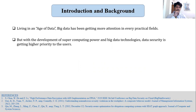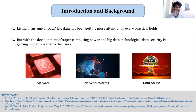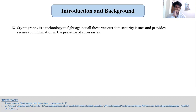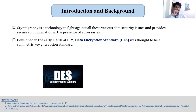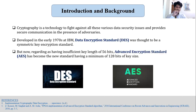Let's start with some introduction and background. Living in the age of data, big data has been getting more attention in every practical field, but with the development of computing power and technology, data security is getting more and more priority, as traditional threats such as malware, network worms, and data abuse are also increasing. Cryptography is a technology to fight against all these various breaches or security issues. Developed in the early 1970s at IBM, DES or Data Encryption Standard was thought to be the key encryption standard, but now regarded as having insufficient key length of 56 bits, AES or Advanced Encryption Standard has become the new standard having a minimum of 128 bits of key size.